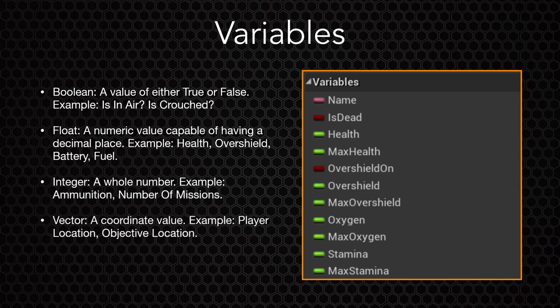Vectors are coordinate values consisting of an x value, a y value, and a z value. These would be used not only to determine a player's location, but also to save it onto a save file. And text would be used to store something such as the player's name, as seen by the pink color on the right.